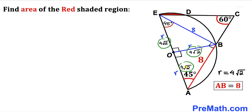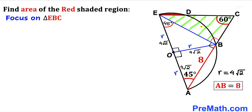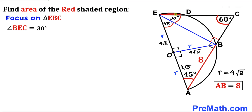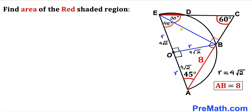Now let's focus on right triangle EBC. We know one angle is 60 degrees and angle EBC is 90 degrees, so angle BEC must be 30 degrees, since the sum of angles in a triangle equals 180 degrees.